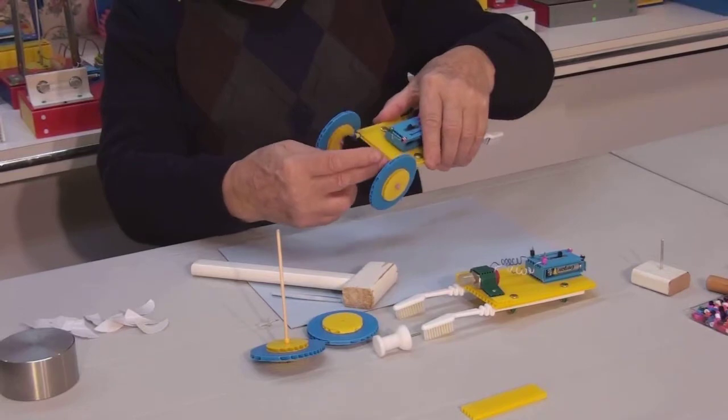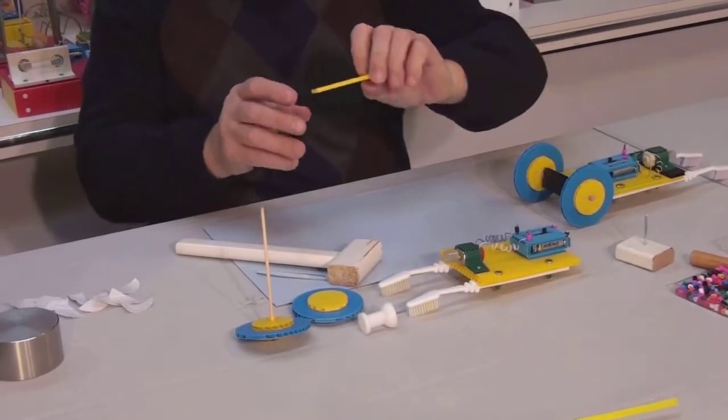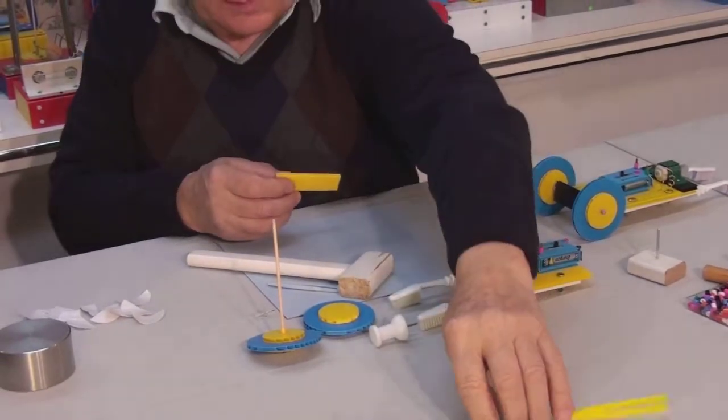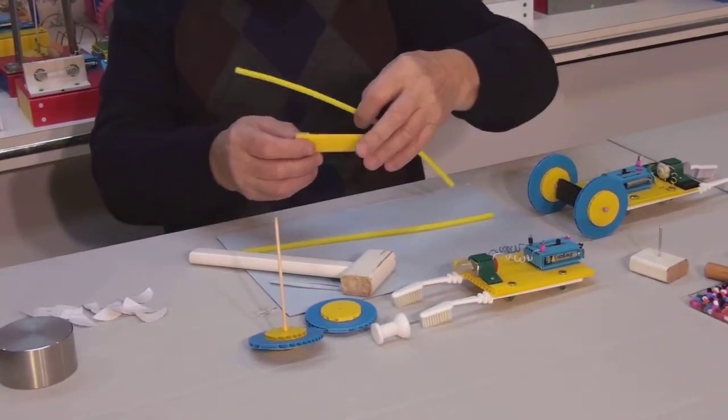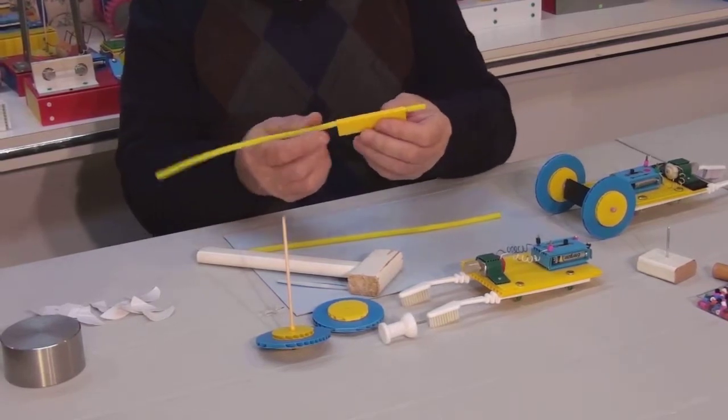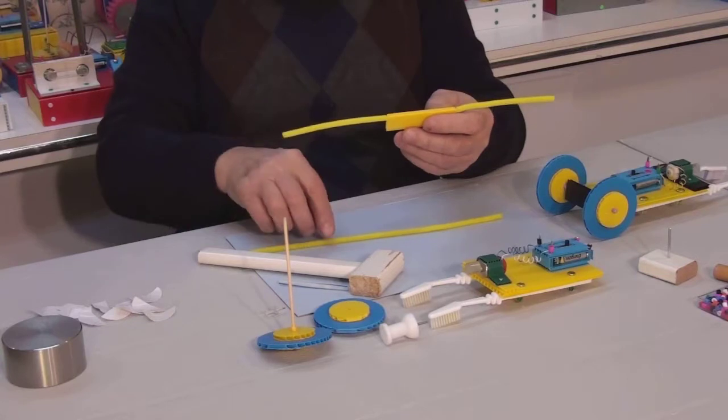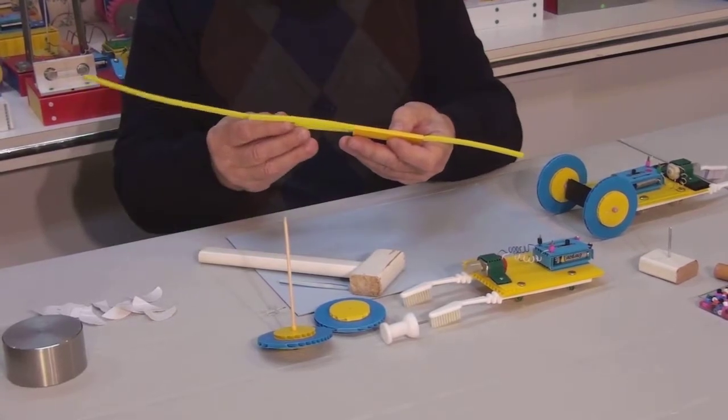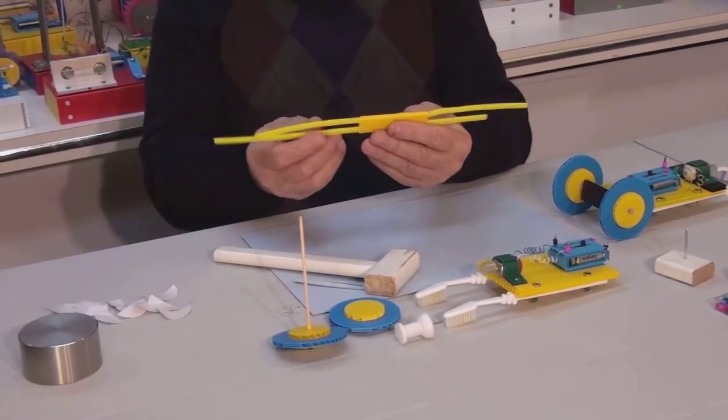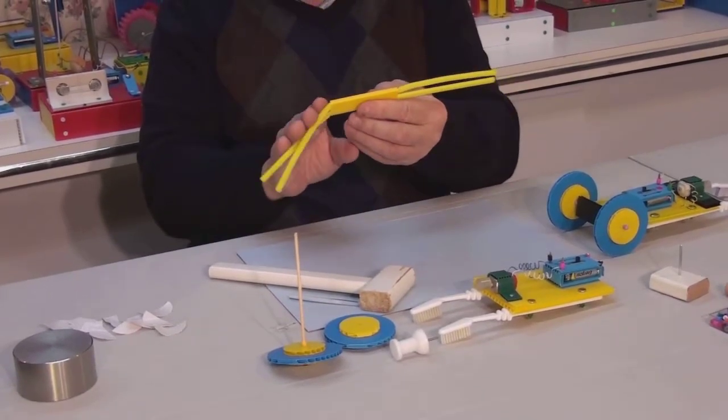Now we will use this plate to help suspend the rear wheels. Take the two pipe cleaners and insert them into the outer channels on both sides of this plate. Make sure that the plate is centered. Bend them like so.